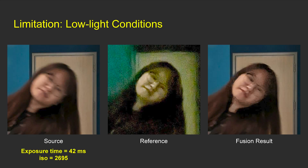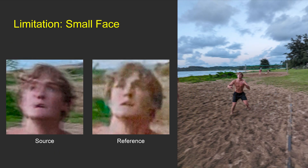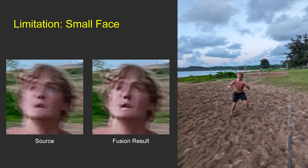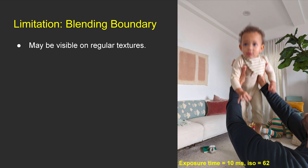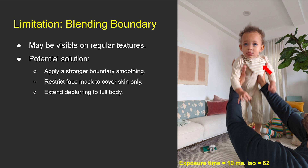We discuss the limitations and failure cases of our method. The quality of our fusion results mainly depends on the quality of the ultra-wide image. Under extreme low-light conditions, the ultra-wide image could be excessively noisy, and the fusion result may look noisy as well. When the input face is too small, the ultra-wide image may not have enough facial details for de-blurring, and the fusion result may still look blurry. Our fallback mechanism will skip fusion for both extreme low-light and small faces. As we only apply fusion to face regions, when the clothes have regular texture, the blending boundary could be visible, which could be mitigated by applying strong blending boundary smoothing, restricting the face mask to cover skin only, or extending the face mask to cover the full body.